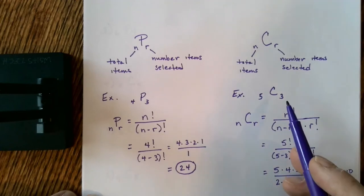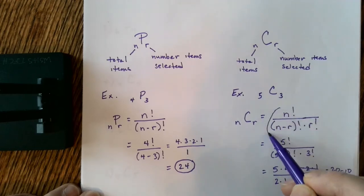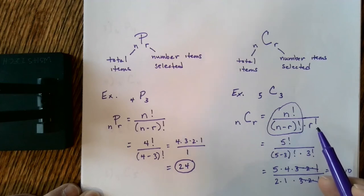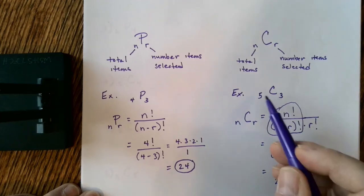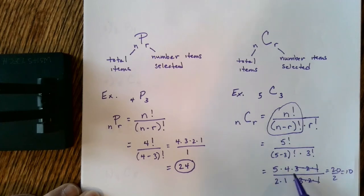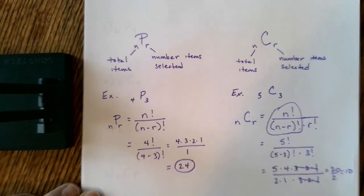What about the combination? Its formula includes the permutation formula — this part is basically the permutation formula — but we also divide by r factorial, which eliminates all of those arrangement issues since we don't care about order. So for 5 items taken 3 at a time: 5 factorial divided by (5 minus 3) factorial times 3 factorial, which is 120 divided by 2 times 6, giving us 10 possible combinations.